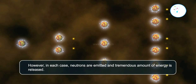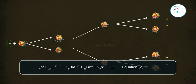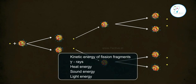Neutron plus 92U235 gives rise to 54Xe140 plus 38Sr94 plus 2 neutrons. Equation 2.